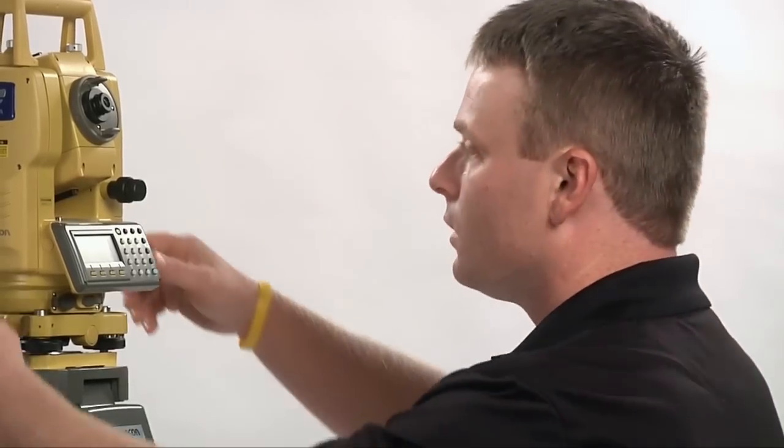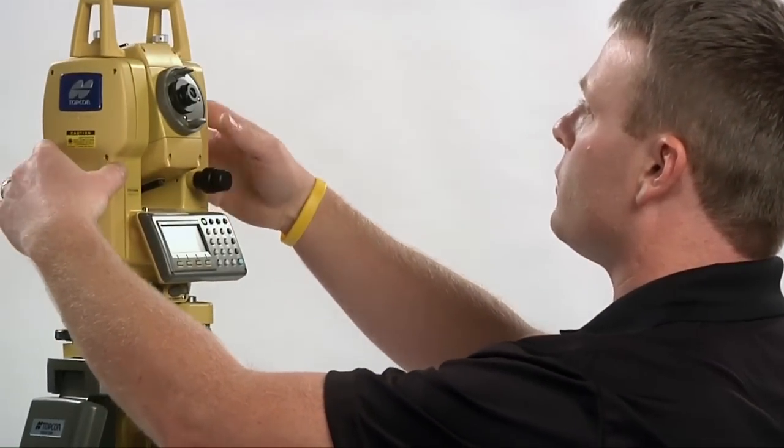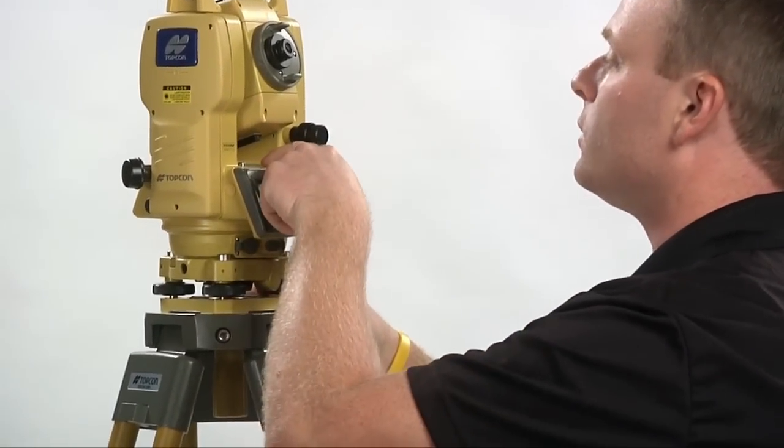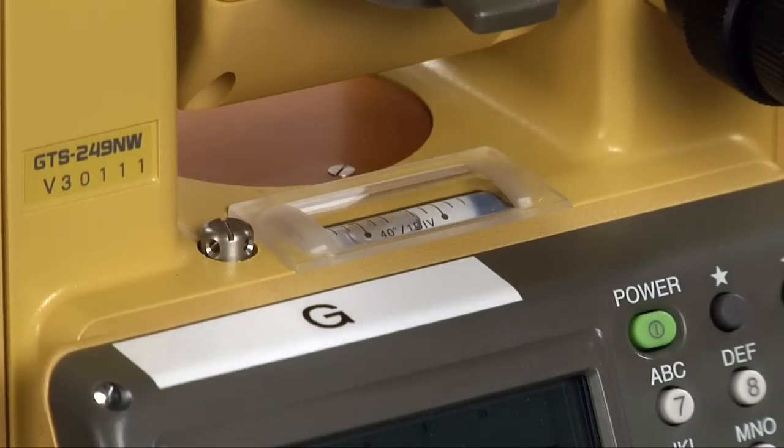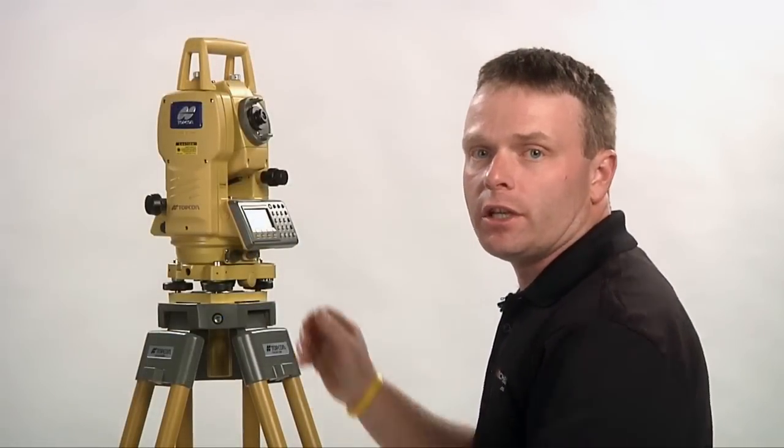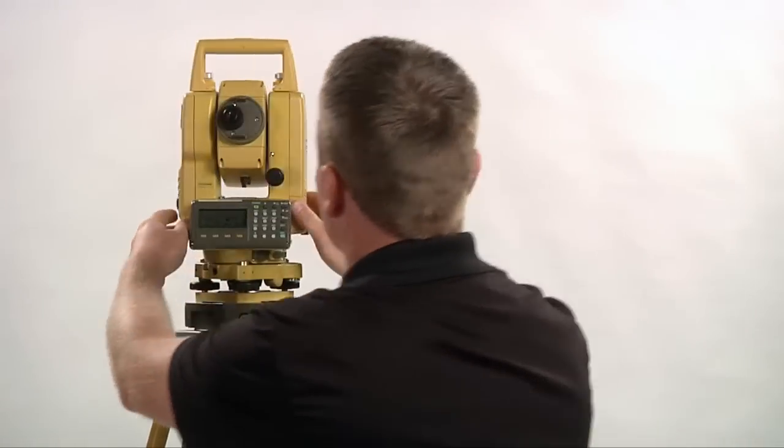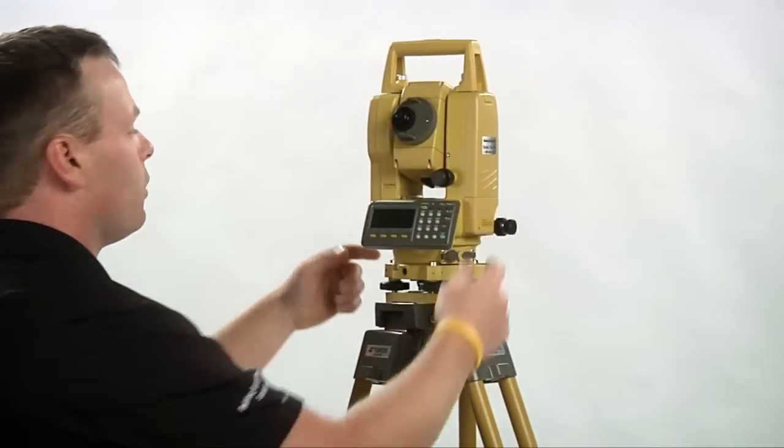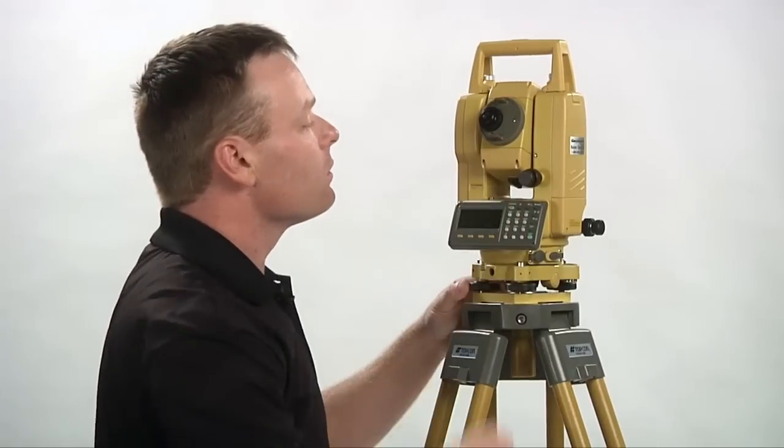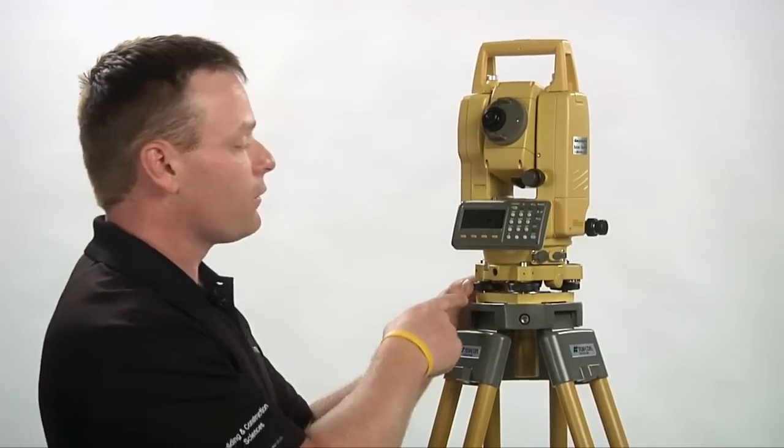In order to level the plate level, we must use the foot screws. Start by placing the sides of the machine over two foot screws and level the plate level over those two foot screws. Now turn the machine 90 degrees so the sides of the machine over this last foot screw and level the plate level with this last foot screw only.